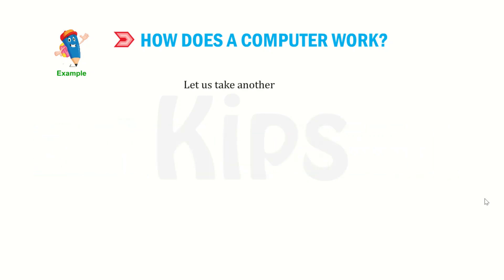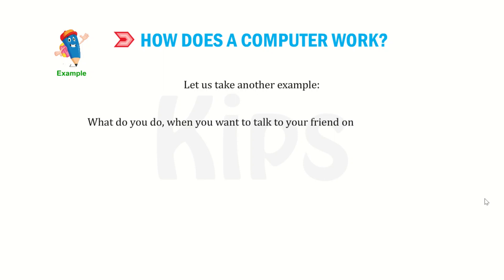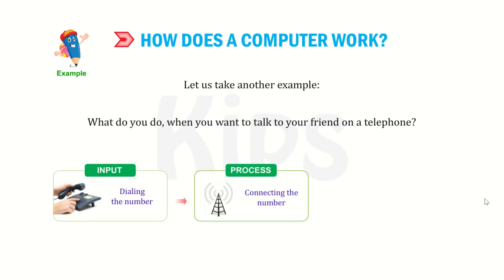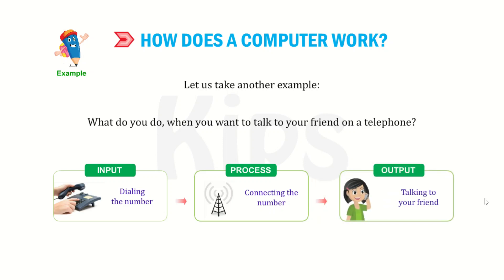Let us take another example. What do you do when you want to talk to your friend on a telephone? Input is dialing the number. Process is connecting the number. Output will be talking to your friend.